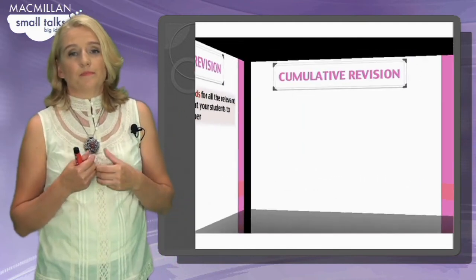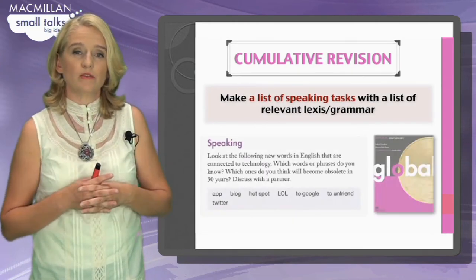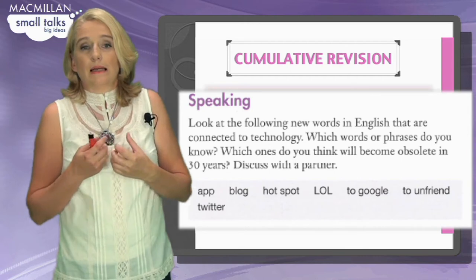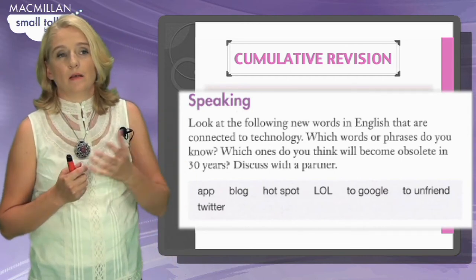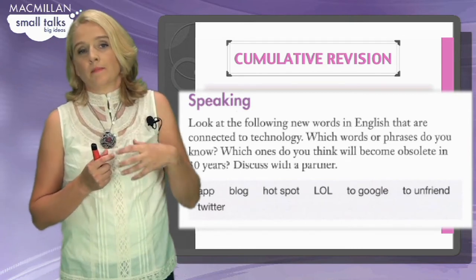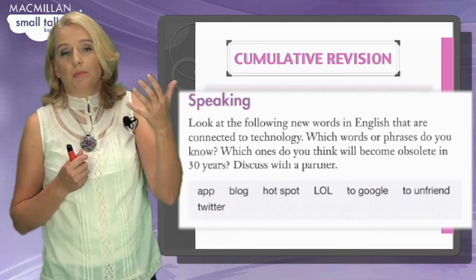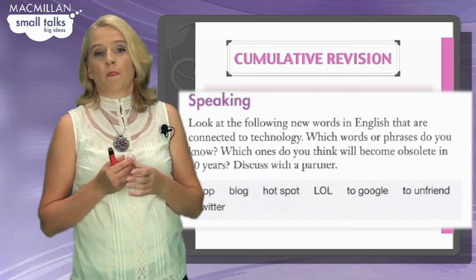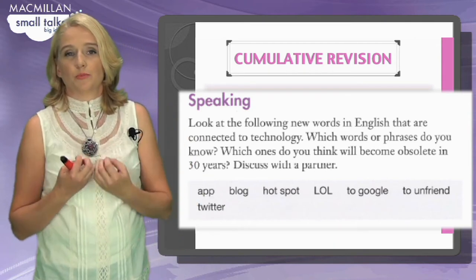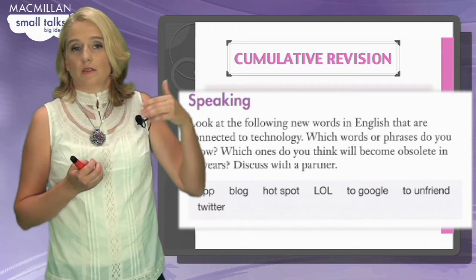The next idea: give students different speaking tasks — for example, one of my favorite tasks from Global Advanced, where students look at inventions and decide how likely these things are to remain in use in 30 years' time. The language students will need is the language of speculation, future structures, maybe synonyms for 'become obsolete.' I make a list of expressions students can use with that particular task. And again, students repeat the task after 10 days, 30 days, 60 days.